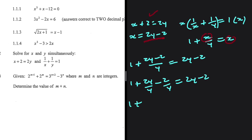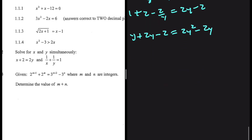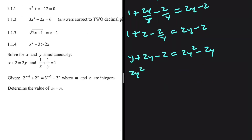Expanding, we get 1 plus 2y divided by y minus 2 divided by y equals 2y minus 2. The y's cancel, leaving 1 plus 2 minus 2 divided by y equals 2y minus 2. Multiplying both sides by y gives y plus 2y minus 2 equals 2y squared minus 2y, which rearranges to 2y squared minus 5y plus 2 equals 0.